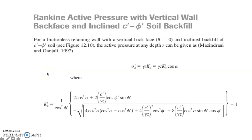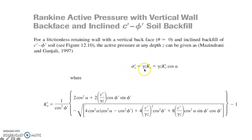Let's move on to Rankine active pressure with a vertical wall back face and inclined soil backfill. According to Mazindrani and Ganjali, the active pressure for a vertical retaining wall with an inclined soil backfill is: sigma = gamma × z × Ka, or equivalently gamma × z × Ka × cos(alpha), where Ka is given by a specific formula.